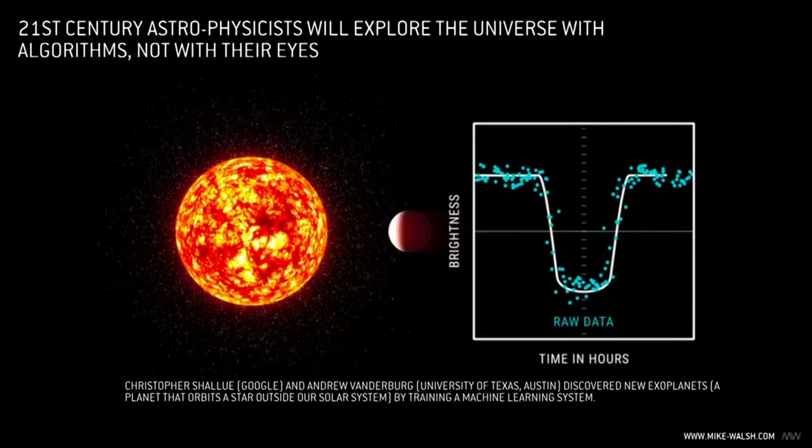And that set off a Google engineer by the name of Chris Shallow. He thought this is a classic example of an area where maybe machine learning and artificial intelligence could help. So he did some googling around. He found another astronomer, Andrew Vandenberg, who's at the University of Texas in Austin. And he said, listen, maybe we should work together.